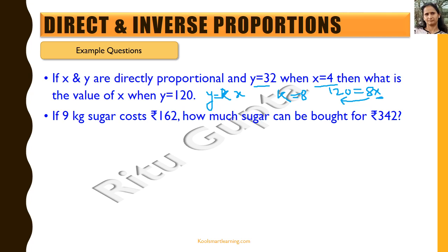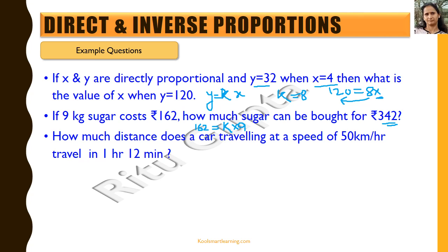Similarly, if 9 kg of sugar costs 162 rupees, how much sugar can be bought for 342 rupees? We know that 162 equals k times 9, so k is the rate of sugar per kg. Finding k lets us calculate how much sugar can be bought for 342 rupees. Another example: how much distance does a car travelling at 50 kilometers per hour travel in 1 hour 12 minutes? Given that the car travels 50 kilometers in 1 hour, we find the proportionality constant and then find the distance for 1 hour 12 minutes.